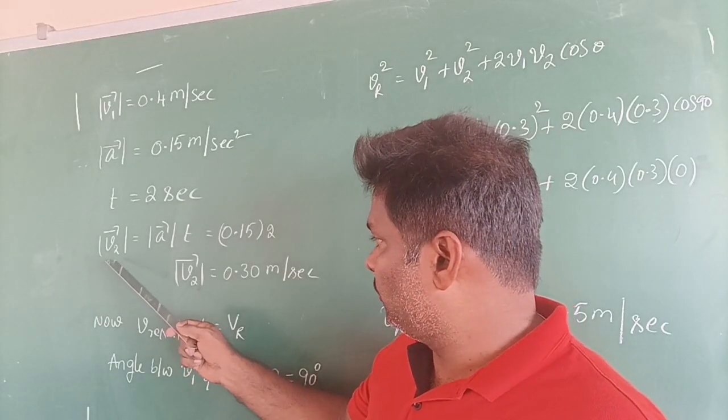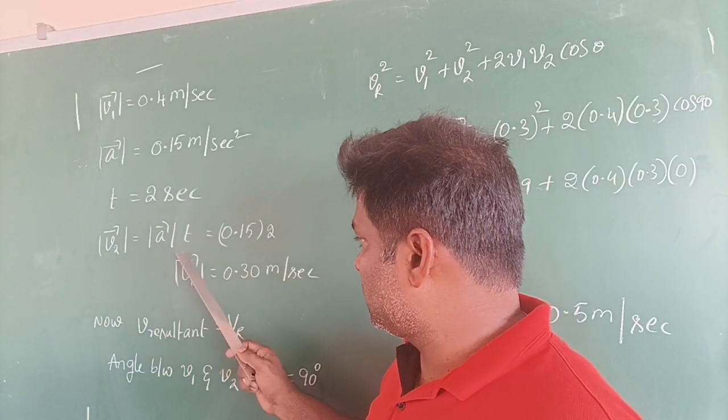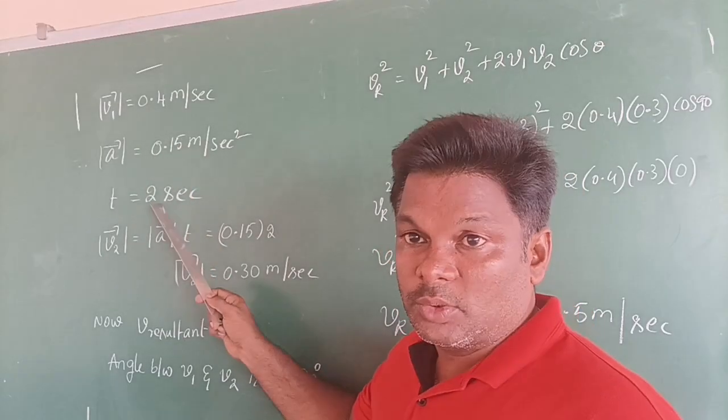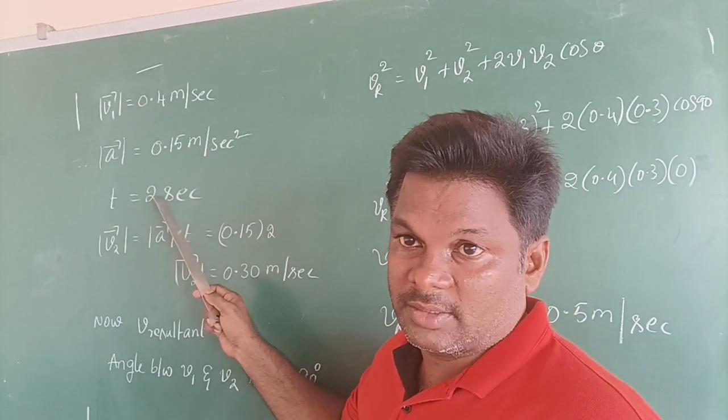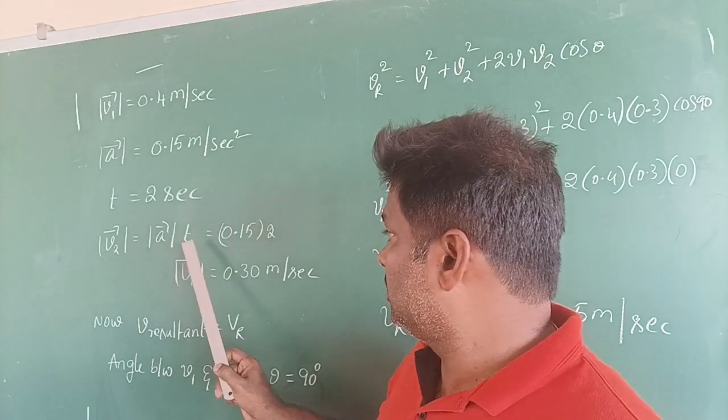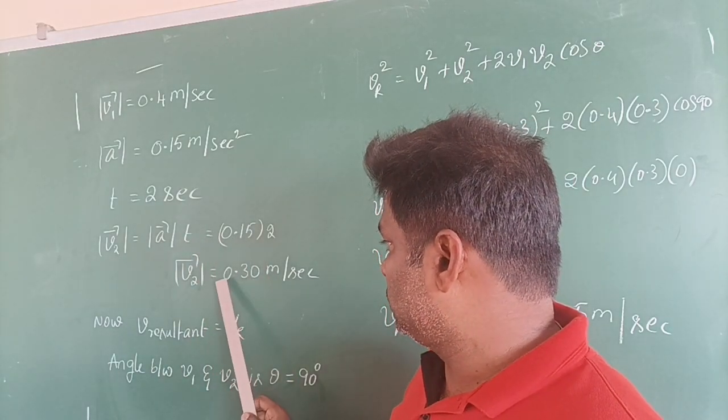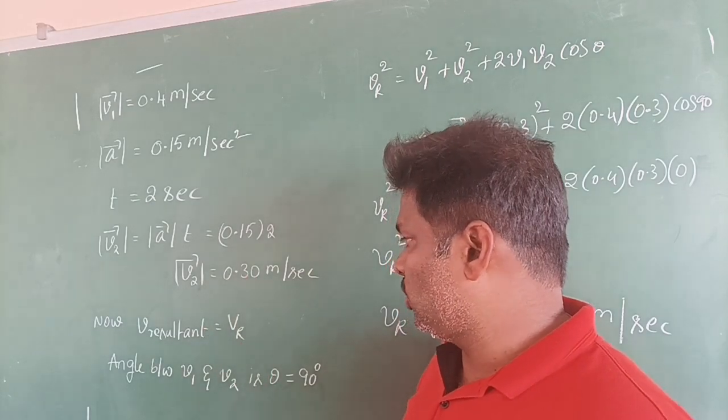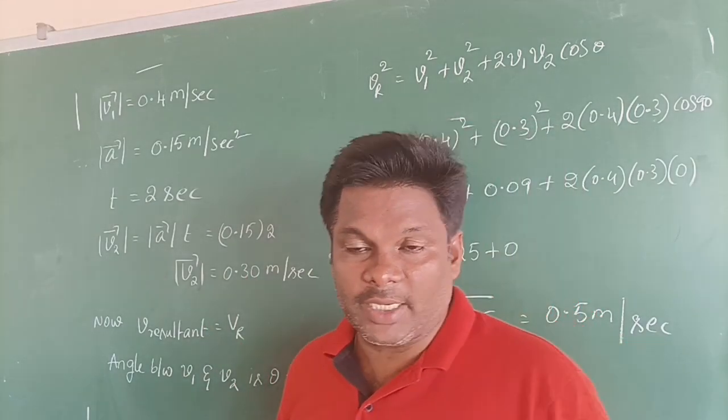Now we will go for V2. At is equal to acceleration into t. What is the acceleration here? 0.15 into 2. T is equal to 2 seconds. So At is equal to V, that is taken as 0.15 times 2, equals 0.30 meter per second. That is your second velocity.